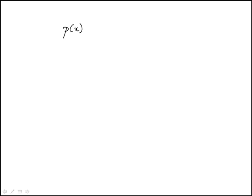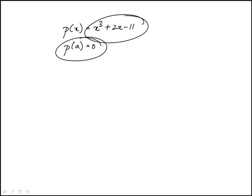We're given this cubic polynomial, and we're asked that it has a real zero, meaning a value of x for which this function intersects the x-axis, or is equal to 0. We're looking for p of a is equal to 0, where a is some number.